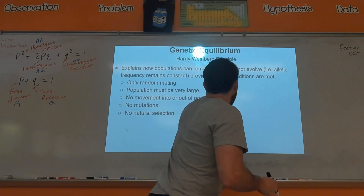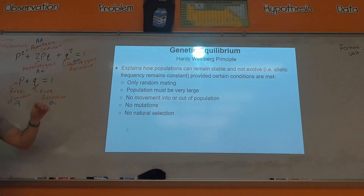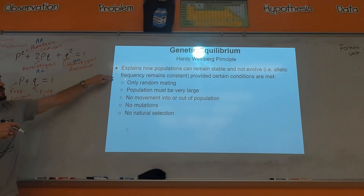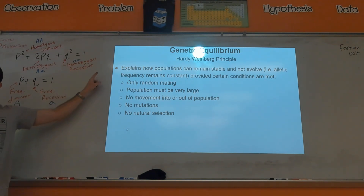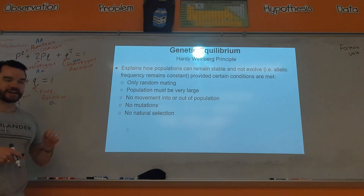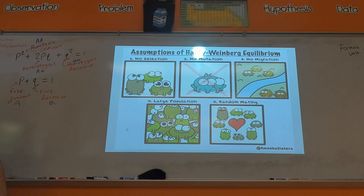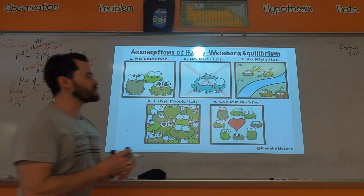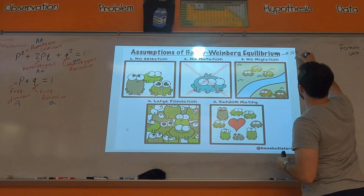Getting into Hardy-Weinberg: the principle is trying to analyze whether a population is evolving. You figure that out by checking whether certain conditions are met. If you violate any one of these conditions, a population will evolve. For a population to not evolve, all five assumptions of Hardy-Weinberg equilibrium must be met — meaning no evolution if we meet these five conditions.